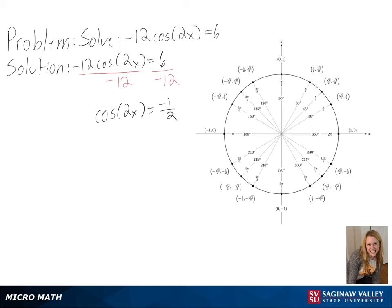Next, we need to look at a unit circle to see where cosine does equal negative 1 half. And we can see here we will get 2 pi over 3 and 4 pi over 3 as our solution.